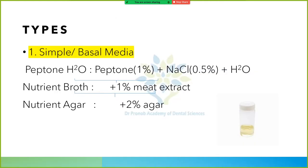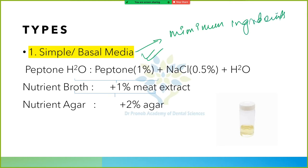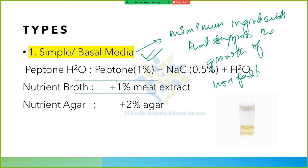Simple or basal media contain minimum ingredients that support the growth of non-fastidious bacteria. Non-fastidious bacteria do not require any extra nutrition — examples include Staphylococcus and Pseudomonas.